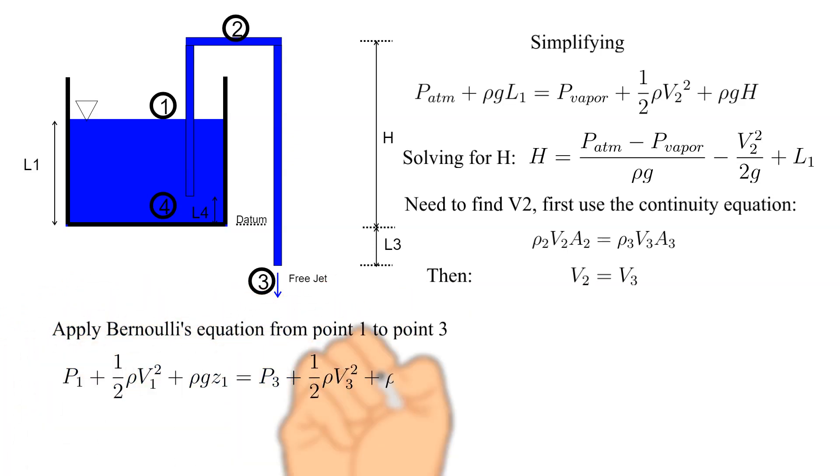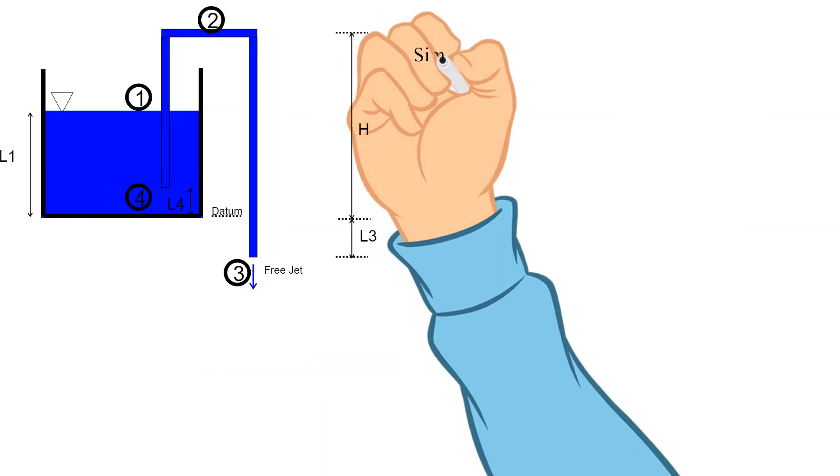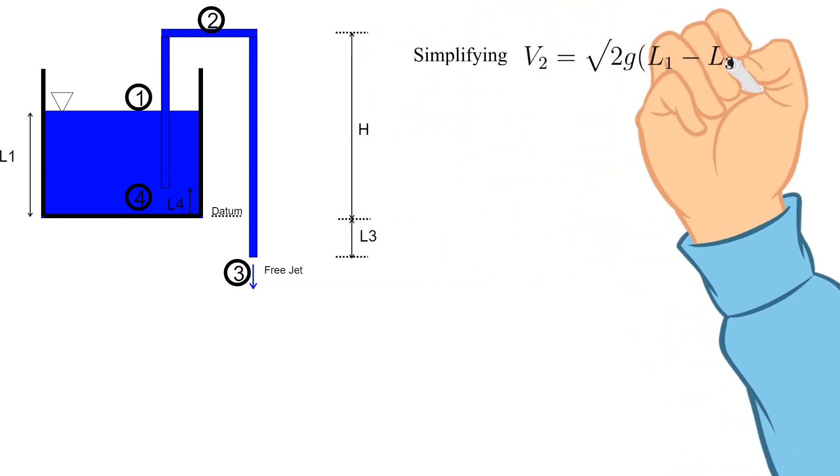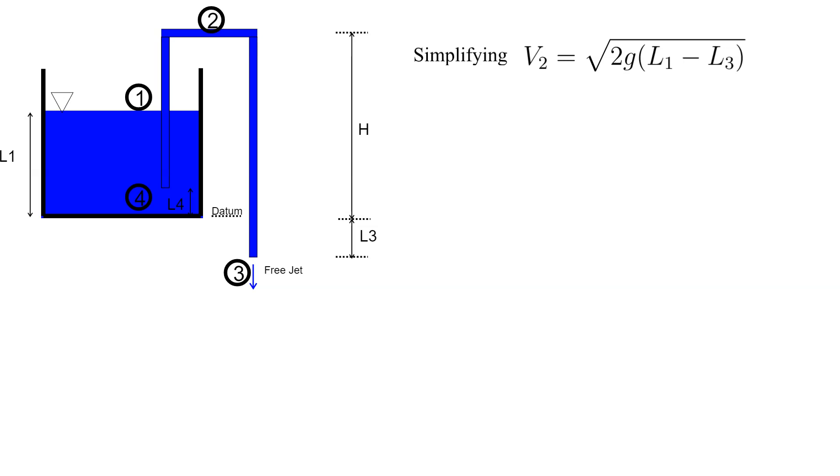We now apply Bernoulli's equation from point 1 to point 3. I will skip the details but they are shown here. Simplifying we get, V2 equals the square root of 2 times g times the quantity L1 minus L3.